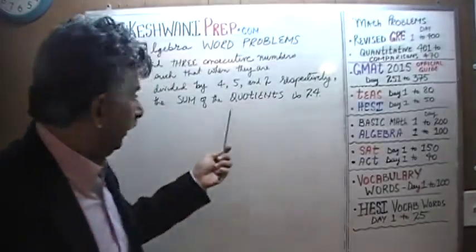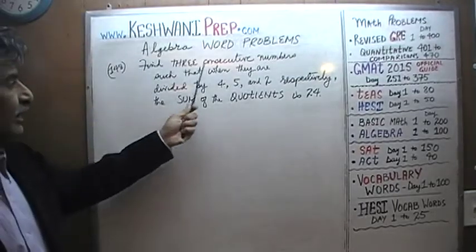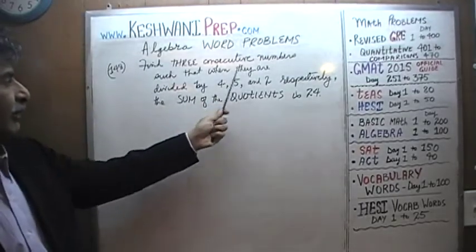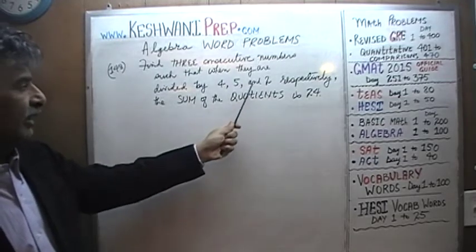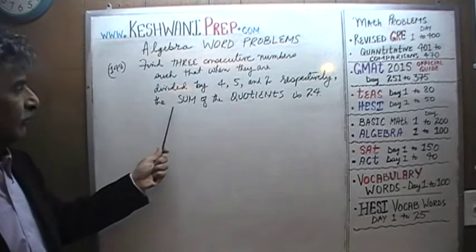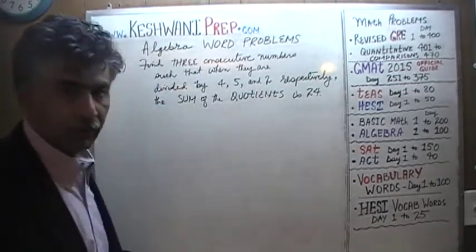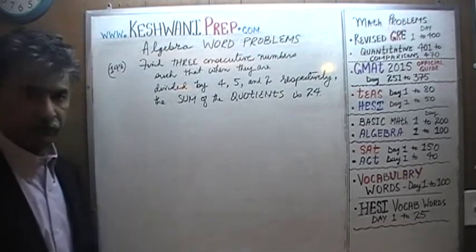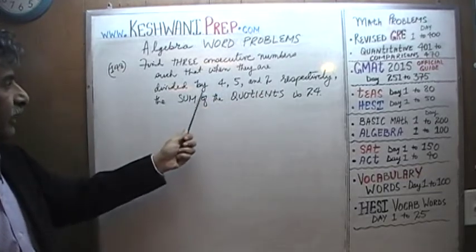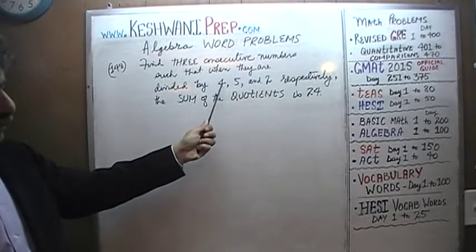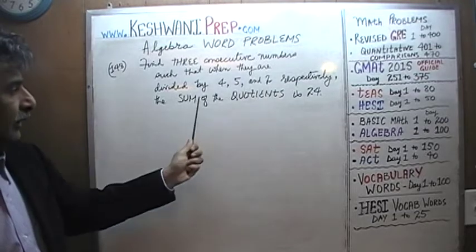Problem number 148, as you can see, is already on the blackboard. It says: find three consecutive numbers such that when they are divided by four, five, and two respectively — there are three of them, consecutive, one after the other — such that when we divide the first number by four, the next one by five, and the one after that by two.